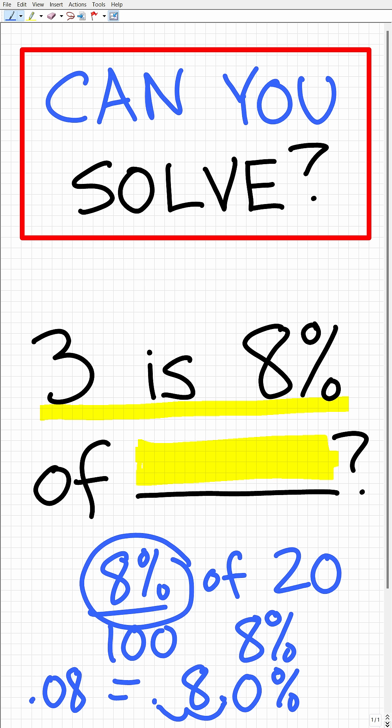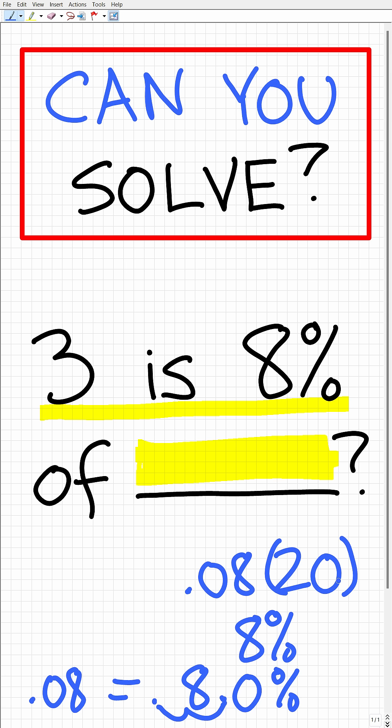So the decimal 0.08 is the same thing as eight percent, and that is the result of dividing the percentage by 100. So once you have your percent written as a decimal, all you have to do is multiply the number—in this case, 0.08 times 20—and you will get the right answer. So this is how you find the percent of a number.